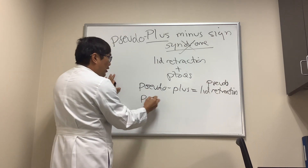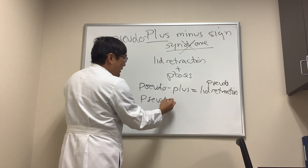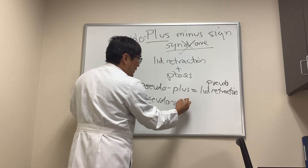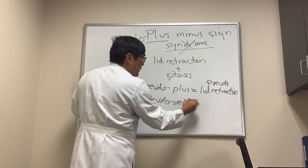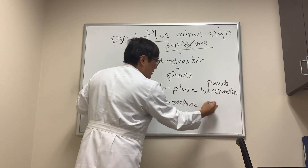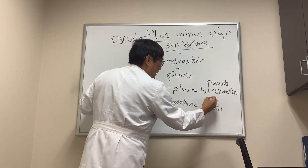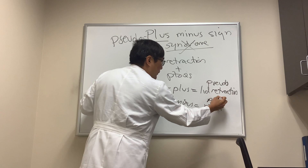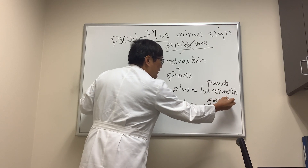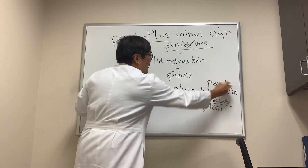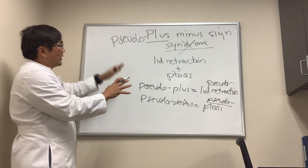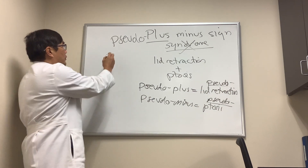If you have a pseudo minus, that means the ptosis is the one that is pseudo. Pseudo means false, of course. So why would this happen?